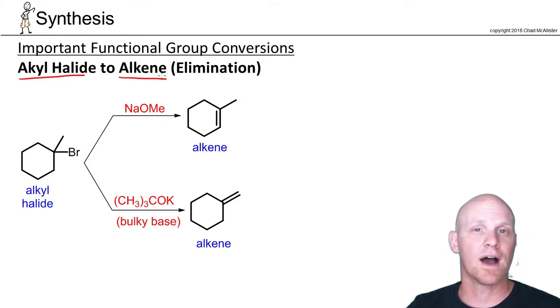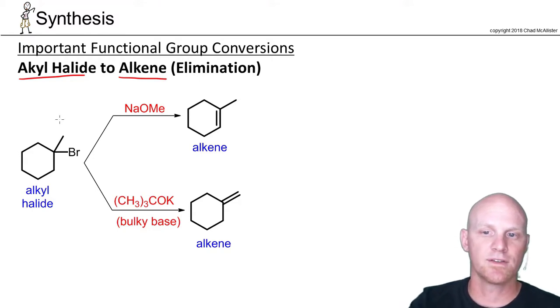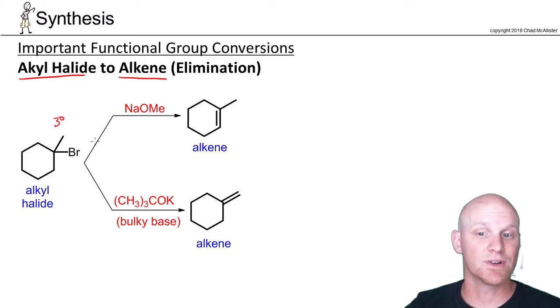But with E2, I can make sure E2 happens over SN2 in many cases. If I've got a tertiary halide like we do here, then E2 is going to predominate, because SN2 largely doesn't happen with tertiary halides. I want to use a nice strong base, like sodium hydroxide, sodium methoxide.